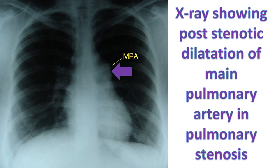X-ray chest may show post-stenotic dilatation of the main pulmonary artery and left pulmonary artery. ECG may show right axis deviation, right ventricular hypertrophy, and right atrial overload.